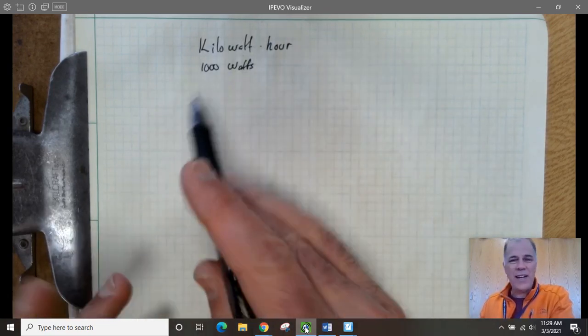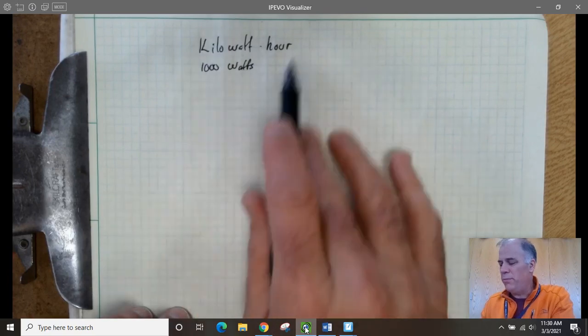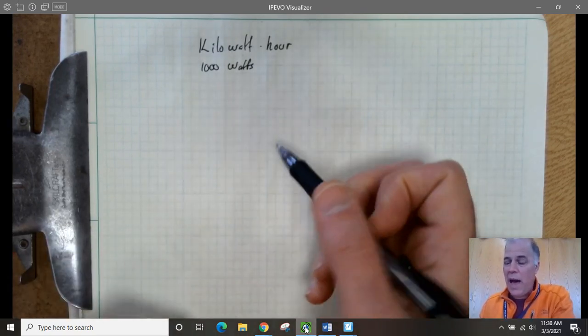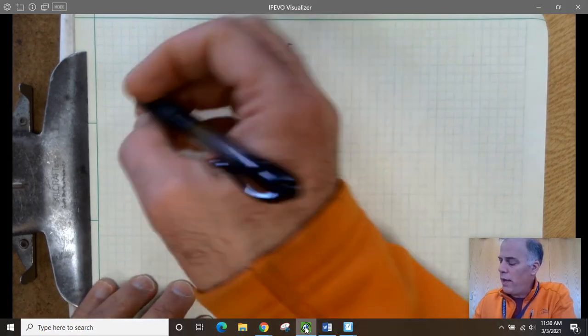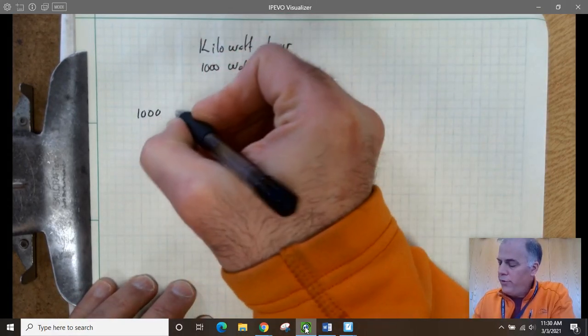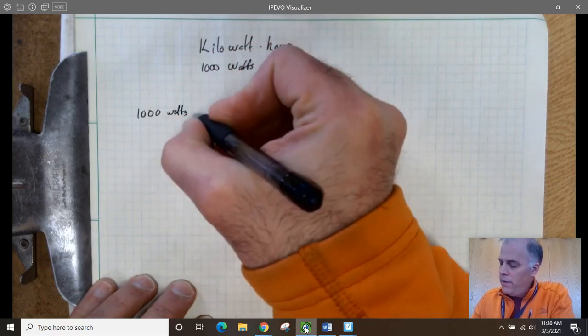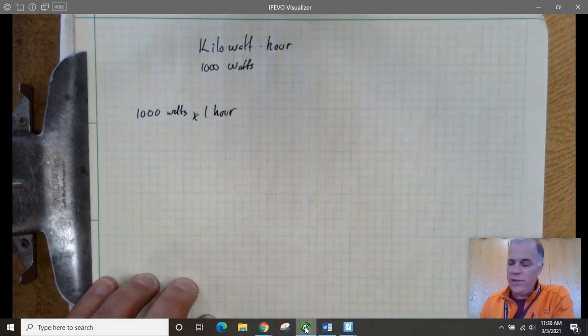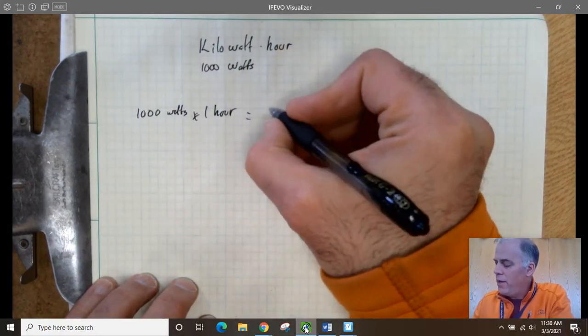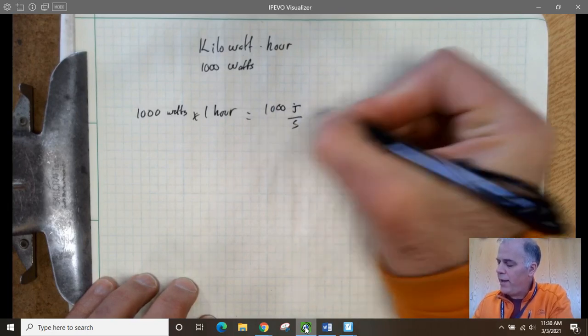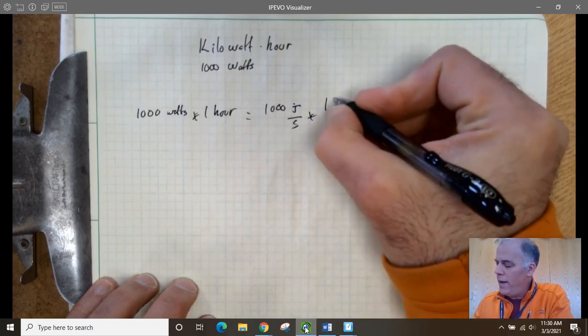So let's figure out what this actually boils down to and what this means. Because this looks like a unit of power, but it's really not. So a kilowatt hour means 1,000 watts times one hour. Not too surprising. That's what I just said. So let's translate that. So that is 1,000 joules per second times one hour.